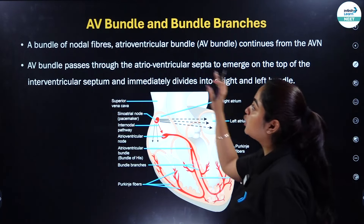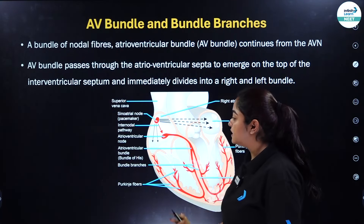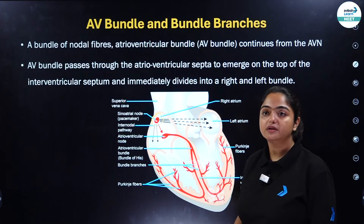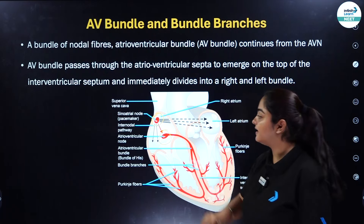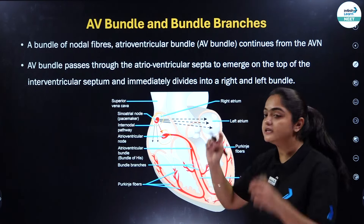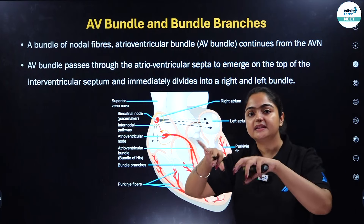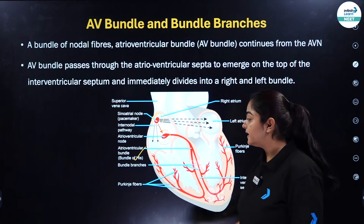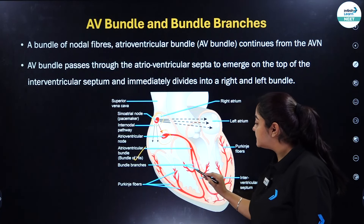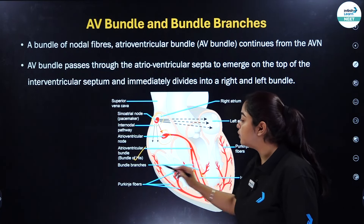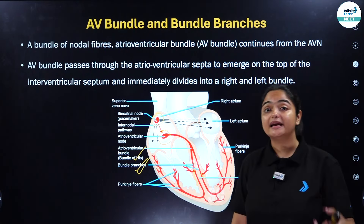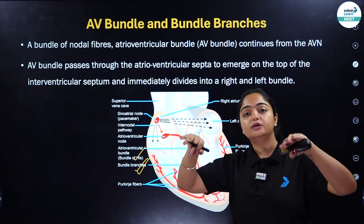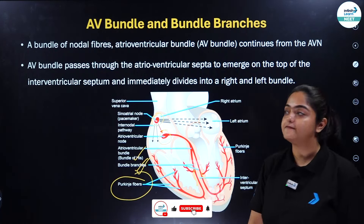Now let's talk about the AV bundle and bundle branches. If you look at this diagrammatic representation, this is your SA node, and this is your AV node. From the AV node, fibers start — when these fibers bifurcate between both ventricles, we call that the bundle of His or AV bundle. And when their branches form fibrous branches, we call those bundle branches. As these bundle branches further separate out towards the ventricles, they are known as Purkinje fibers.